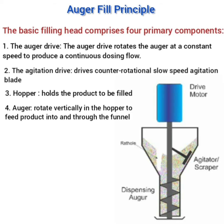The fourth and most important component is the auger — a screw that rotates vertically in the hopper to feed the product into and through the funnel, moving it into the capsule bodies. These were the four primary components of the filling head: the auger, the agitation drive, the hopper, and the auger drive.